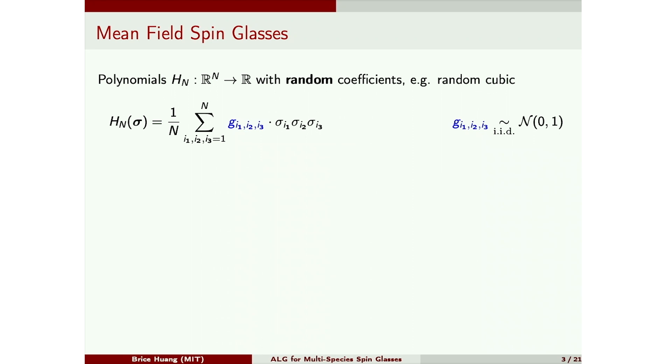So these are polynomials with IID Gaussian coefficients. For example, you can consider a random cubic in n variables where you write down all n cubed monomials of degree 3, put a Gaussian in front of each one, and add them up. So this is maybe the most random cubic you can think of. We'll write this compactly like this. So G3 here is a 3 tensor that carries the n cubed disorder Gaussians.